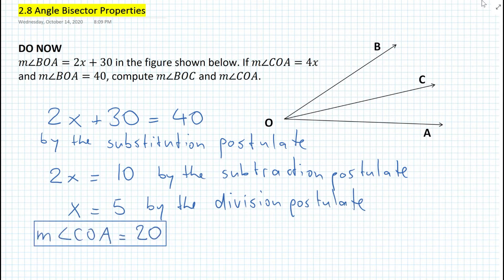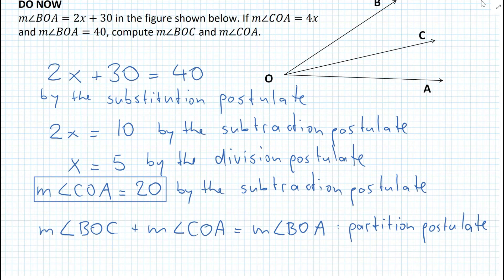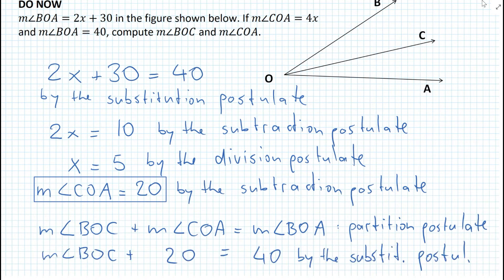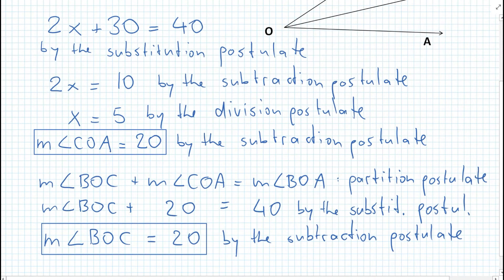Therefore, the measure of angle COA is equal to 20 degrees by the substitution postulate. To find the measure of angle BOC, we write that the measure of angle BOC plus the measure of angle COA is equal to the measure of angle BOA by the partition postulate. Then, by the substitution postulate, the measure of angle BOC plus 20 equals 40, so the measure of angle BOC equals 20 by the subtraction postulate. Keep in mind that, according to the common core on the Regents exam, you want to write out all the steps — not just the algebraic steps, but also the reason why these steps work using postulates, theorems, or definitions.